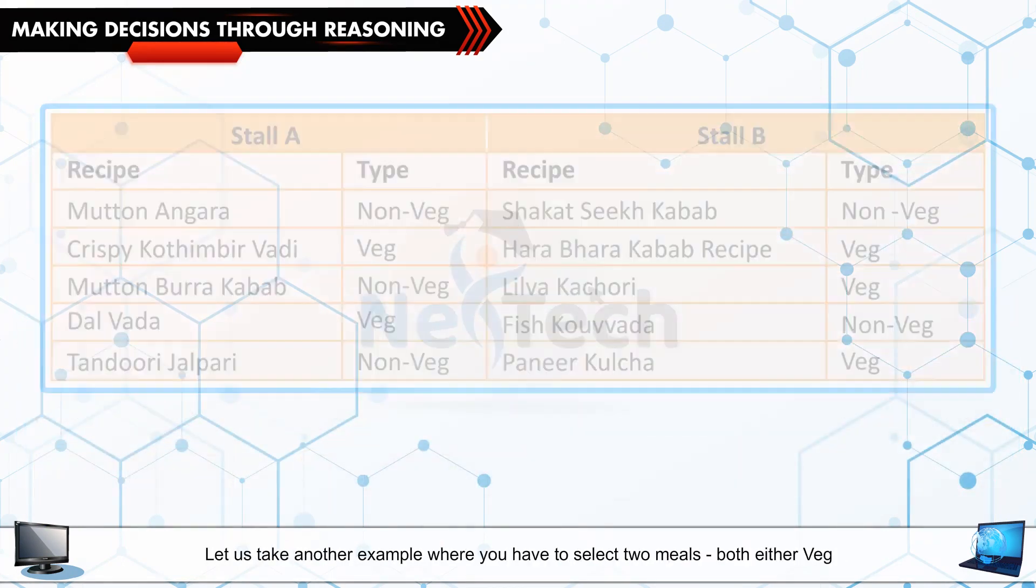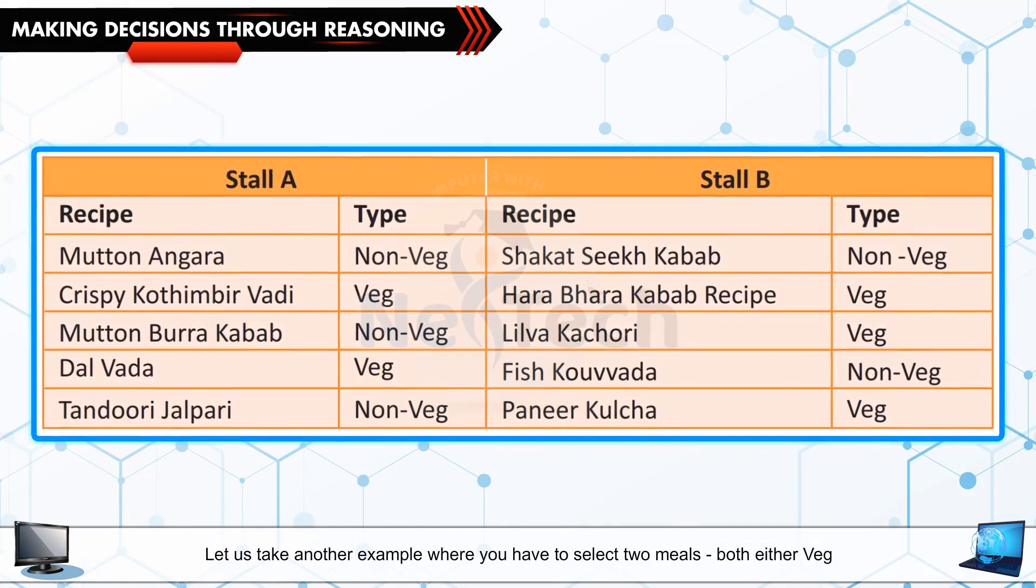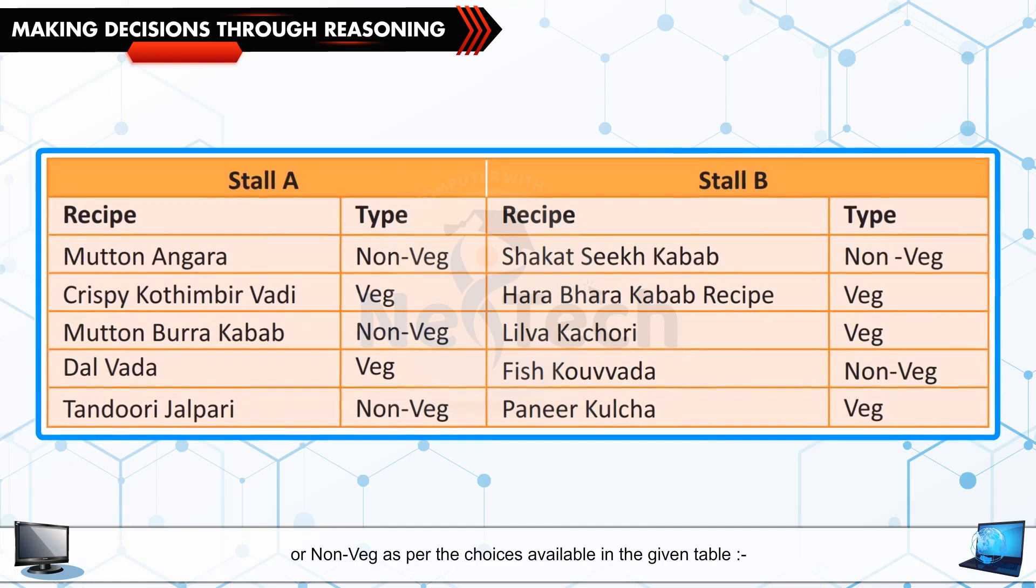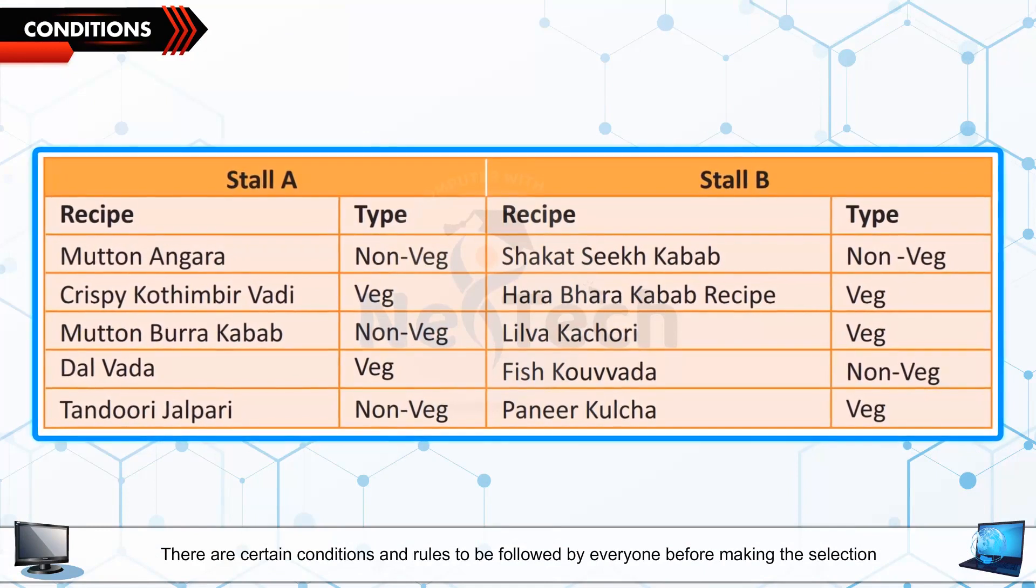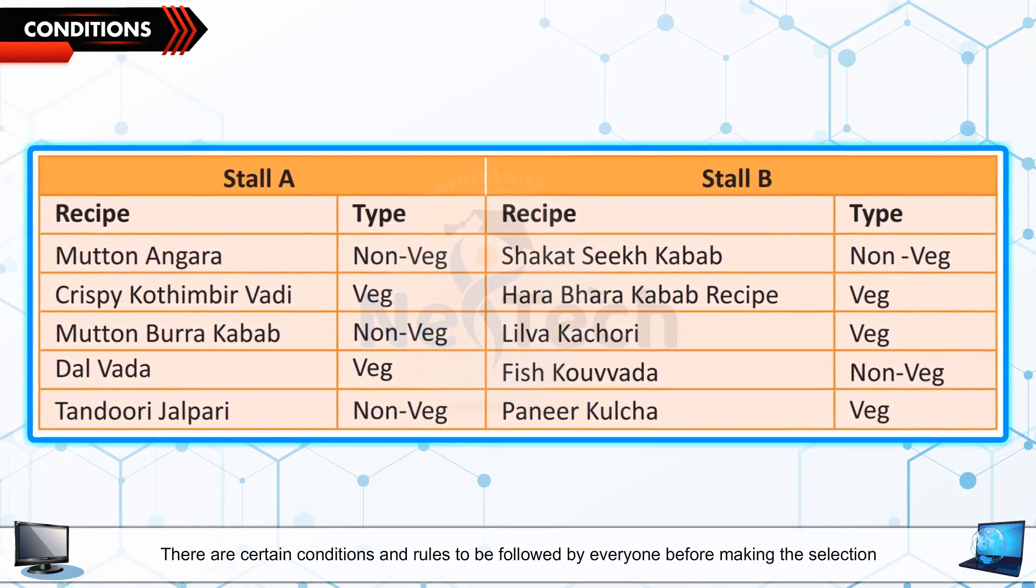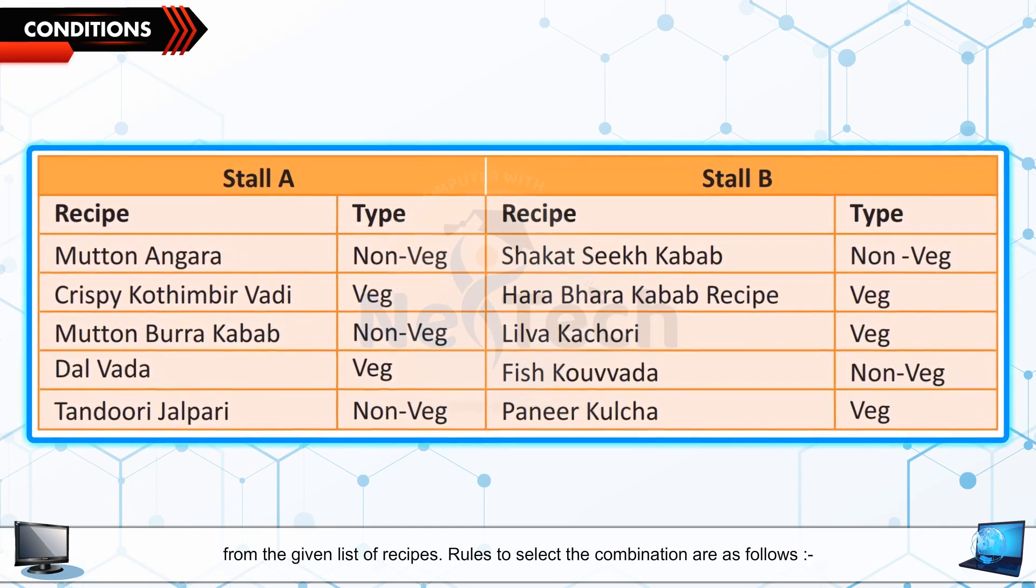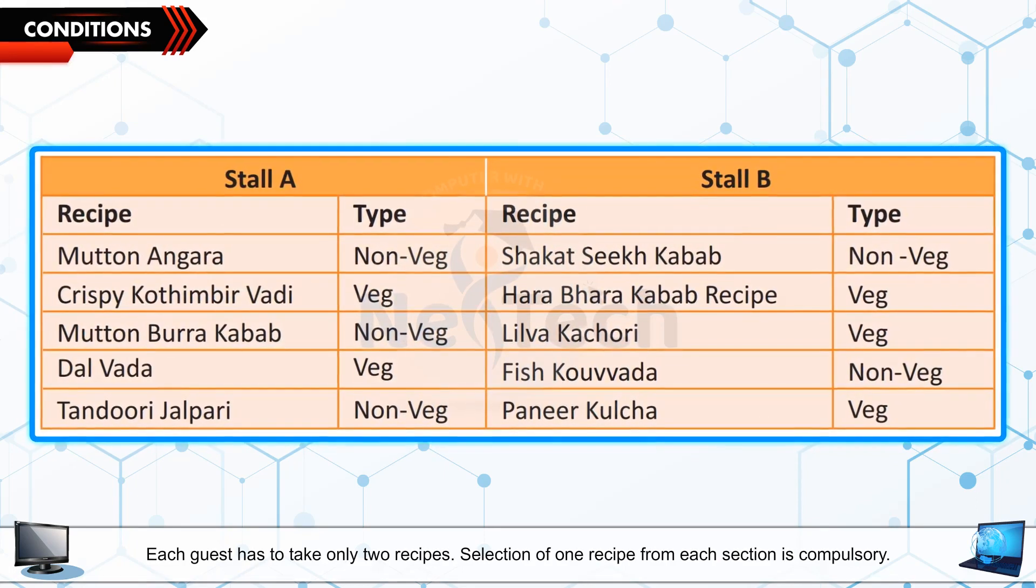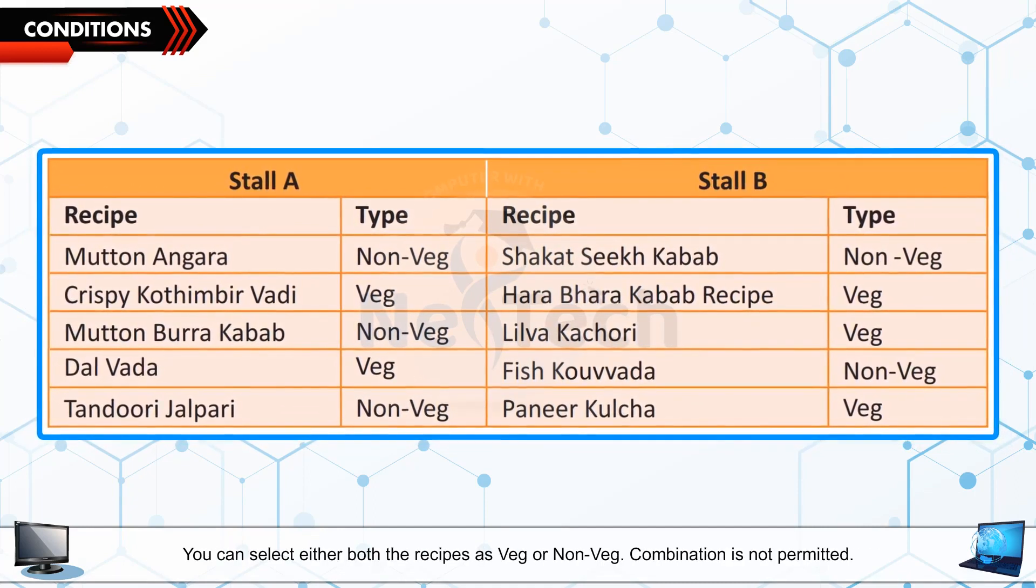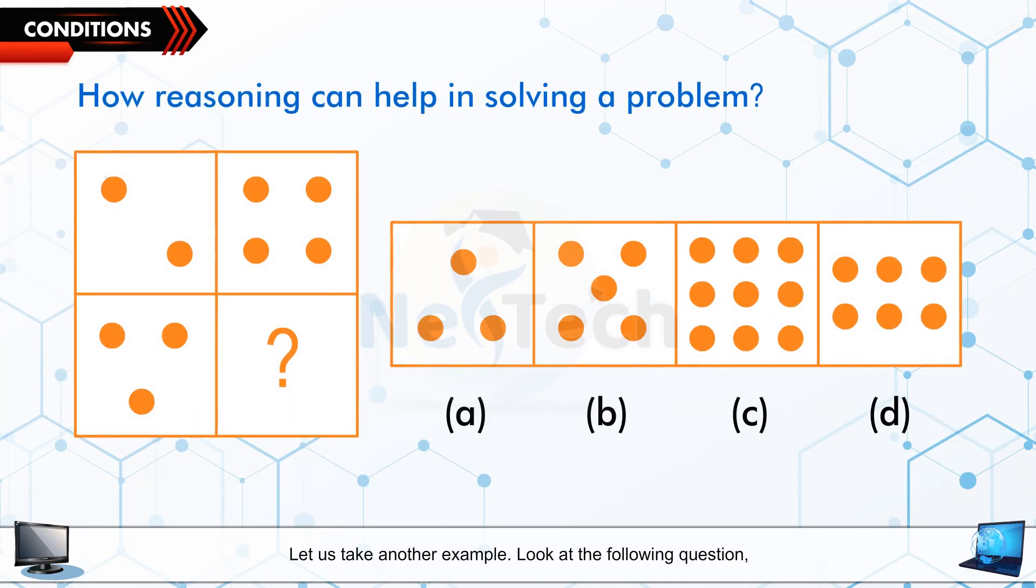Let us take another example where you have to select two meals, both either veg or non-veg as per the choices available in the given table. Conditions: There are certain conditions and rules to be followed by everyone before making the selection from the given list of recipes. Rules to select the combination are as follows: Each guest has to take only two recipes. Selection of one recipe from each section is compulsory. You can select either both the recipes as veg or non-veg. Combination is not permitted.